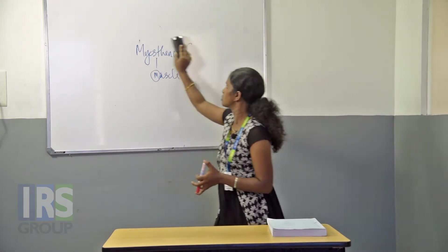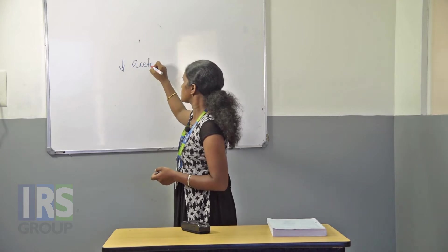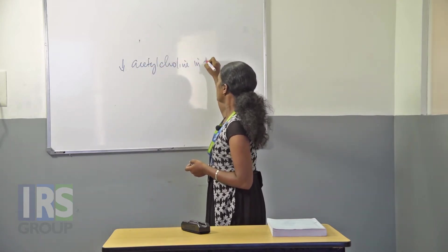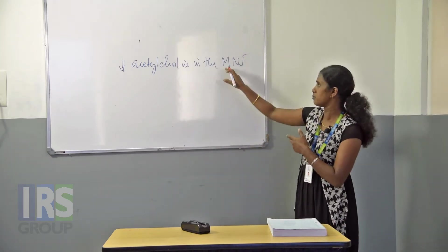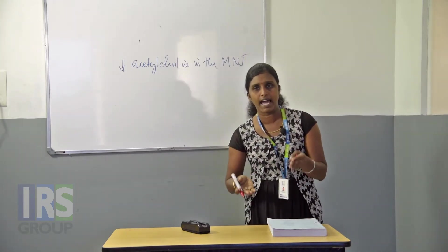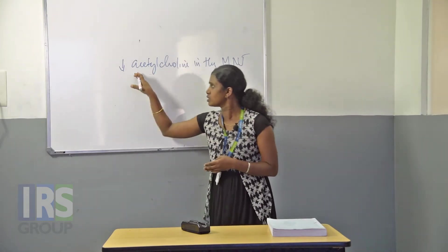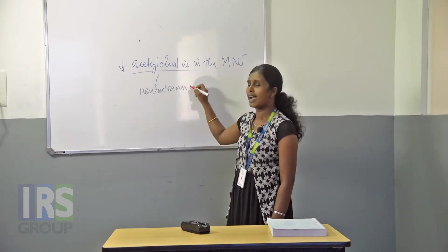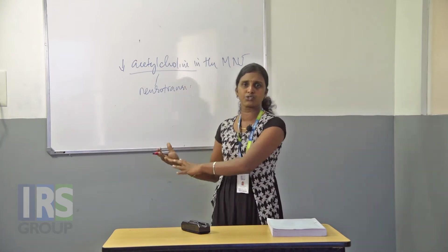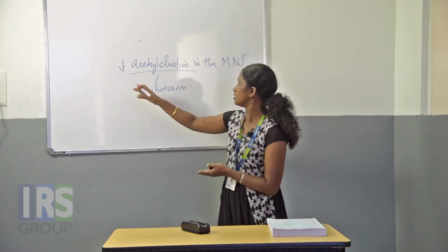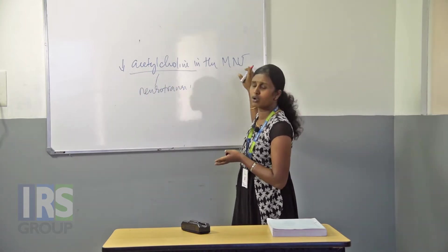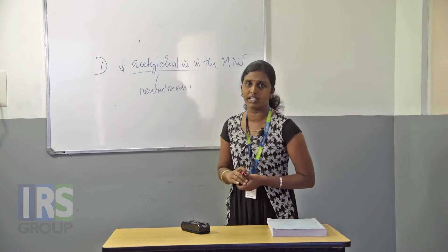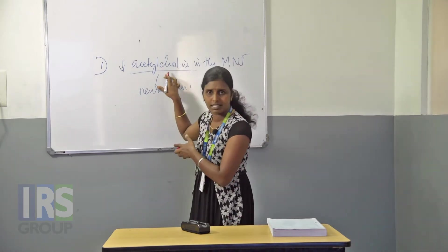The first cause of myasthenia gravis is decreased acetylcholine at the myoneural junction — the junction between muscles and neurons. Acetylcholine is a neurotransmitter responsible for transmitting impulses from the neuron to the muscle for action. A decrease in acetylcholine at the myoneural junction is the first reason leading to myasthenia gravis.